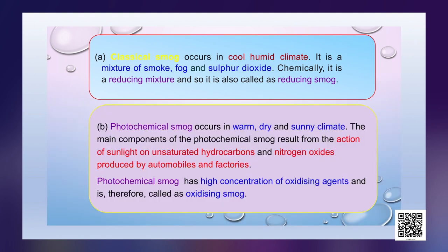Photochemical smog occurs in warm, dry and sunny climate. The main components of the photochemical smog result from the action of sunlight on the unsaturated hydrocarbons and nitrogen oxides produced by automobiles and factories. Photochemical smog has high concentrations of oxidizing agents and is therefore called oxidizing smog.